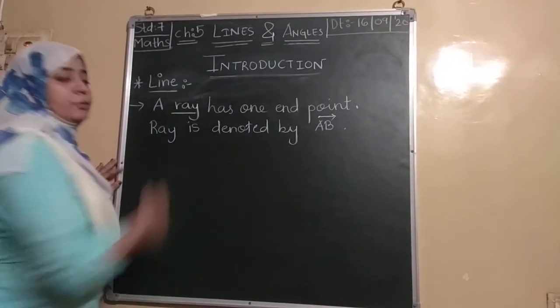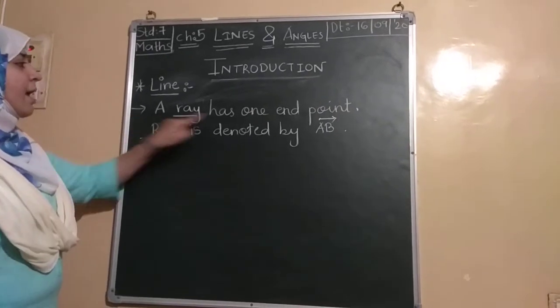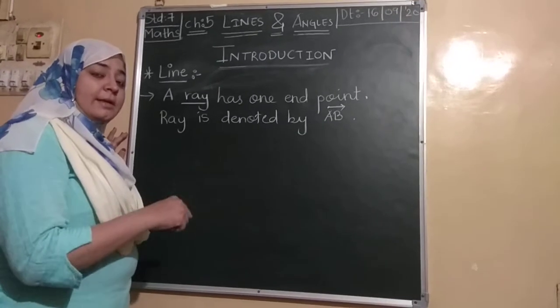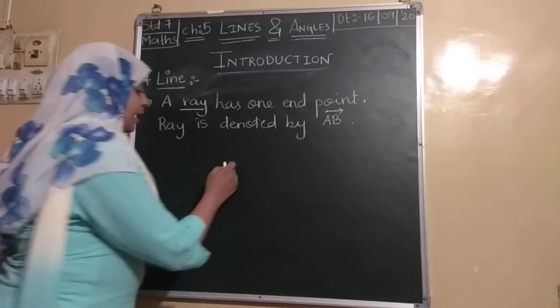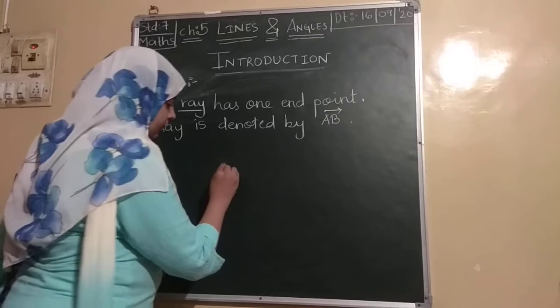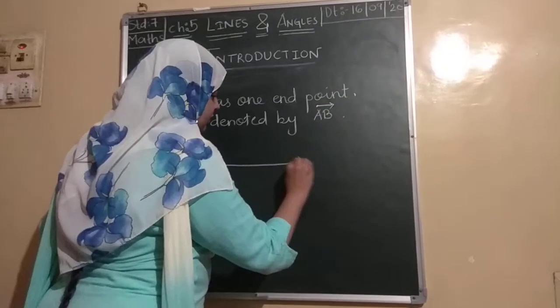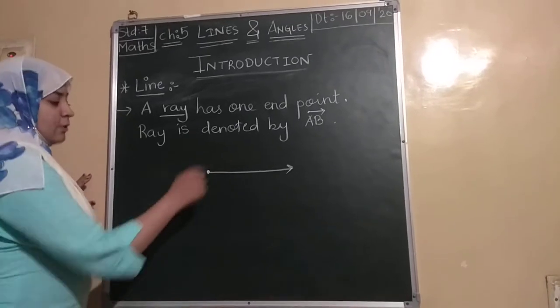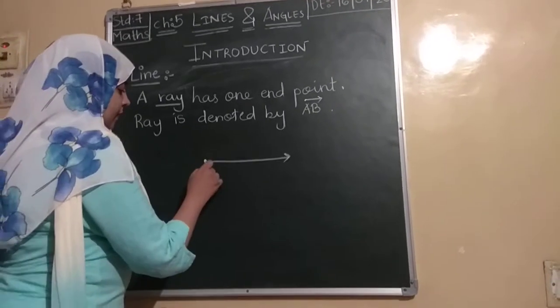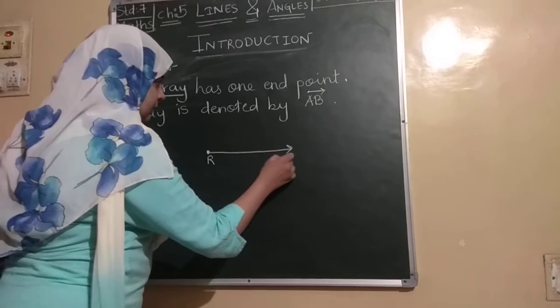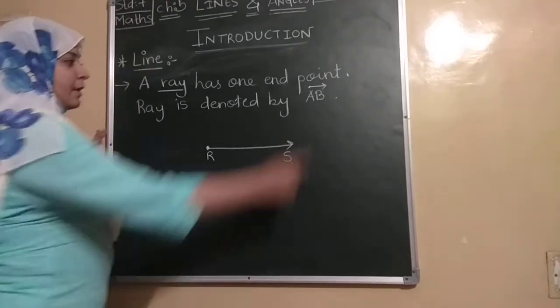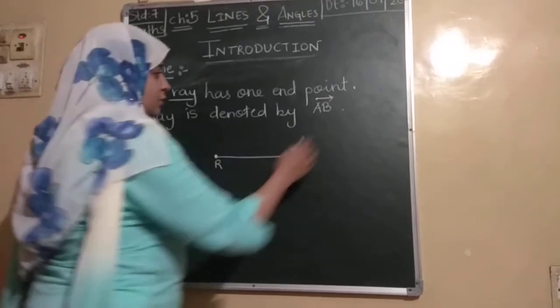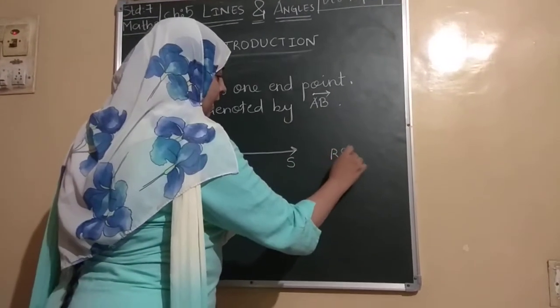Now, ray. We are going to discuss about ray. A ray has one end point. If we draw a ray, it is a part of line. But it has only one end point. So we draw the end point first, and then stretch it from one side as much as we want. This is known as a ray. If I give it names R, S, then how will we denote it? R, S, ray R, S.